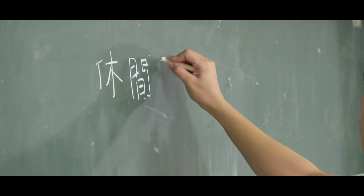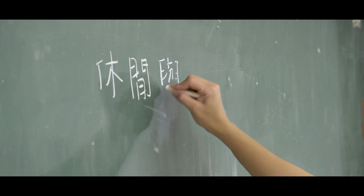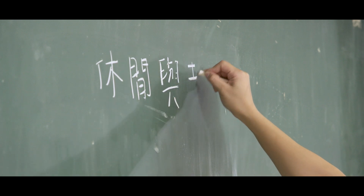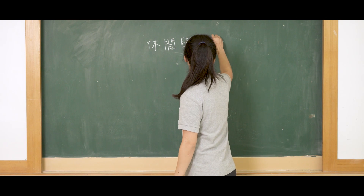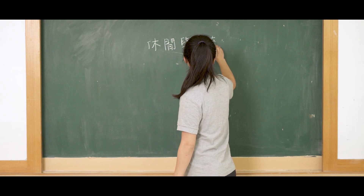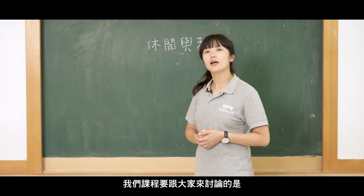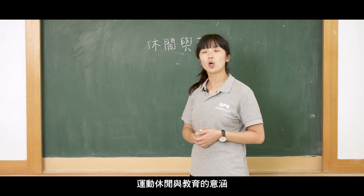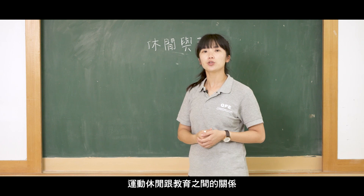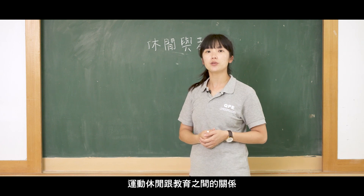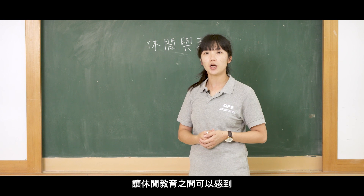接下來我們的課程要跟大家來討論的是運動休閒與教育的意涵，主要是探討運動休閒跟教育之間的關係，其中可以引導學生讓休閒教育之間可以感到更緊密的結合。休閒與教育究竟存在著一種什麼關係呢？首先，休閒與教育可以說是一種不同的概念，工作的概念使用於一個不同的概念。